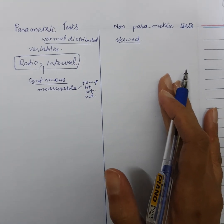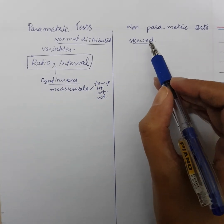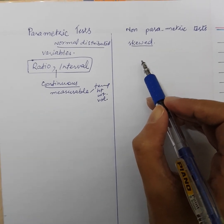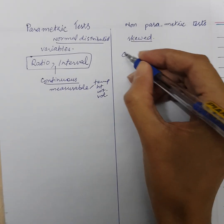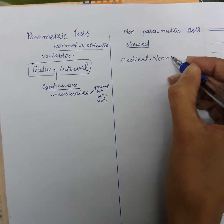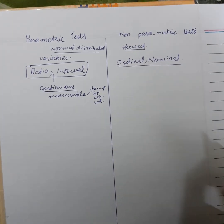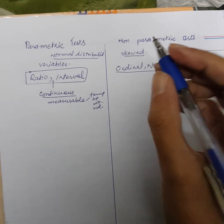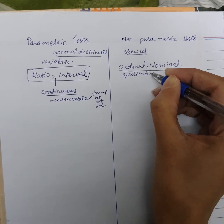In contrast, for non-parametric data, the distribution of the data will not be normal — it will be a skewed one. The variables in data where we use the non-parametric test are ordinal and nominal variables. From our previous knowledge, we know that ordinal and nominal variables are also called qualitative variables.